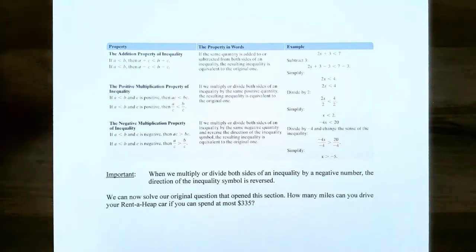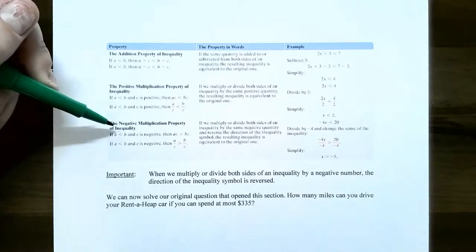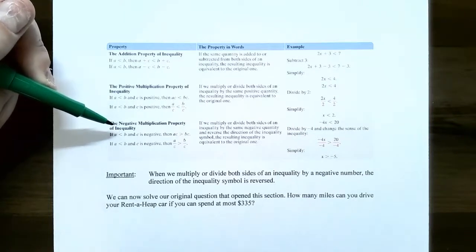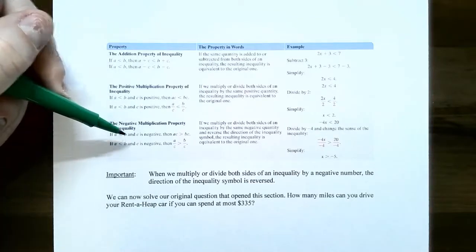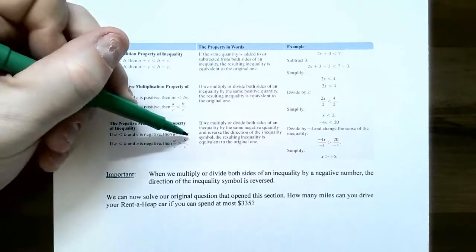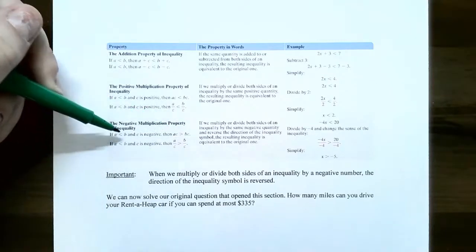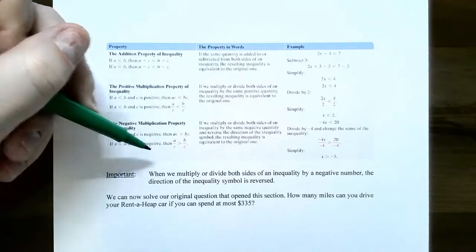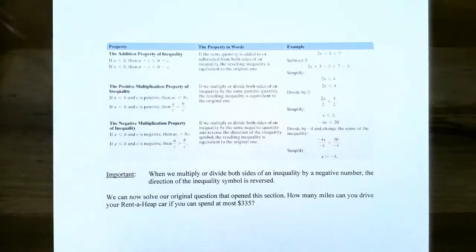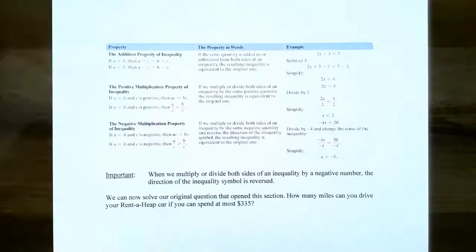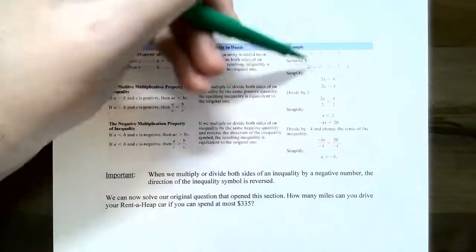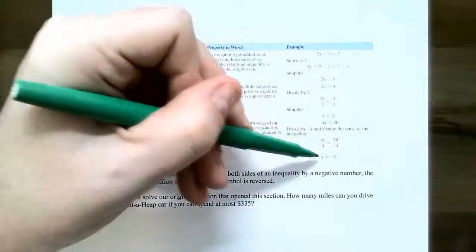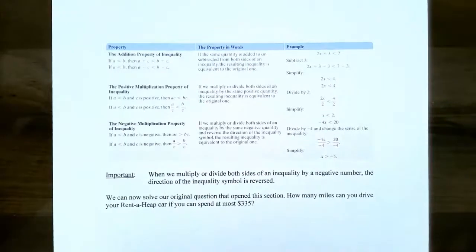The only catch with solving inequalities is that if you ever multiply or divide by a negative quantity on both sides of the inequality, the direction of the inequality is reversed. So if a < b and c is negative and you multiply or divide by that negative number on both sides, the inequality was less than and now it becomes greater than — you have to reverse the inequality symbol.